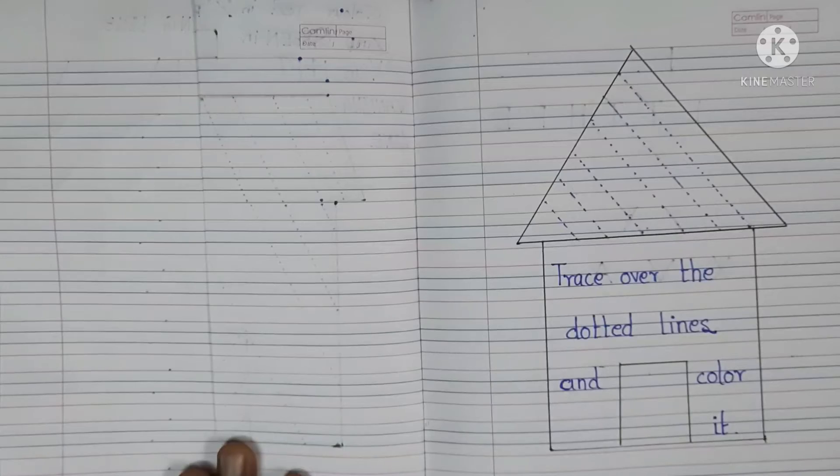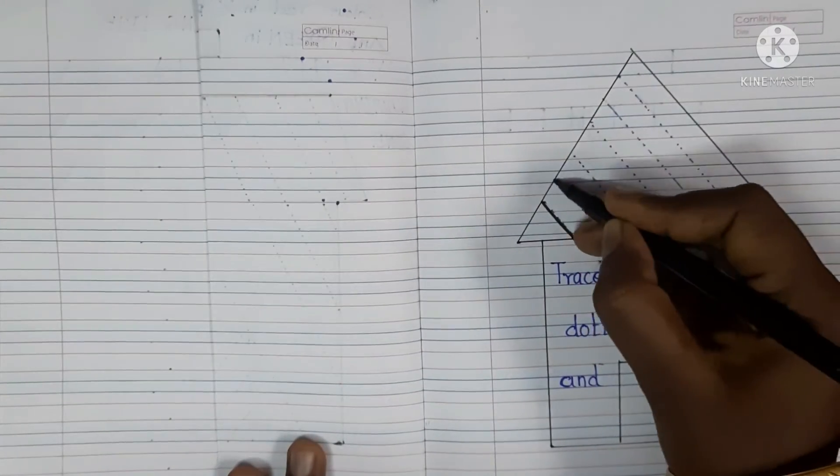Let's paste an activity. Trace the daughter line and color it. Let's color it in the house.